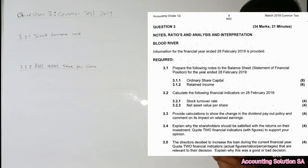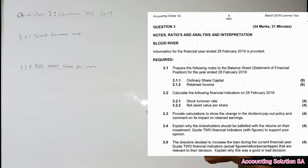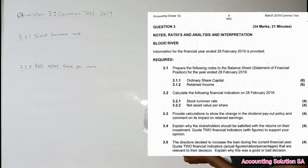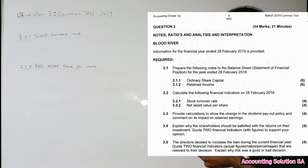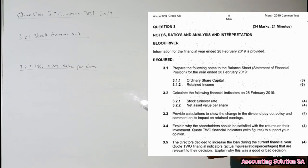Calculate the following financial indicators on 28 February 2019: 3.2.1 — Stock Turnover Rate; and 3.2.2 — Net Asset Value per Share.